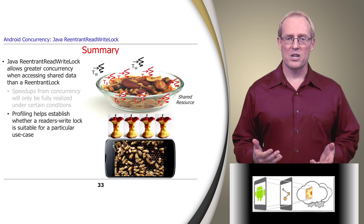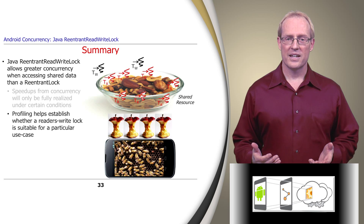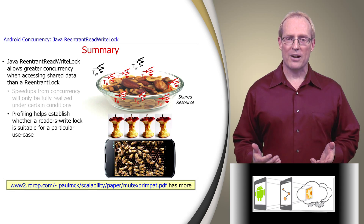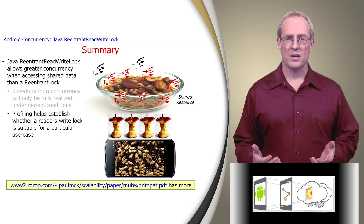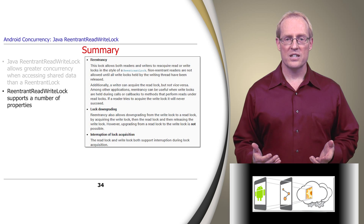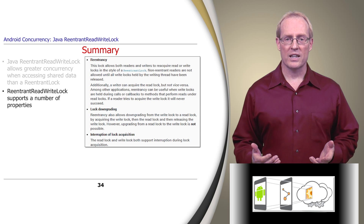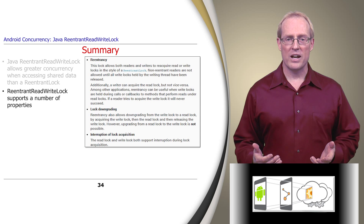Profiling and measurement can be used to determine if a ReentrantReadWriteLock is suitable for a particular use case. This link presents a pattern language for selecting among various locking primitives for concurrent programs. In addition to acquisition order fairness policy, Java ReentrantReadWriteLocks also support recursive lock semantics, lock downgrading from a WriteLock to a ReadLock, and interruption of lock acquisition.